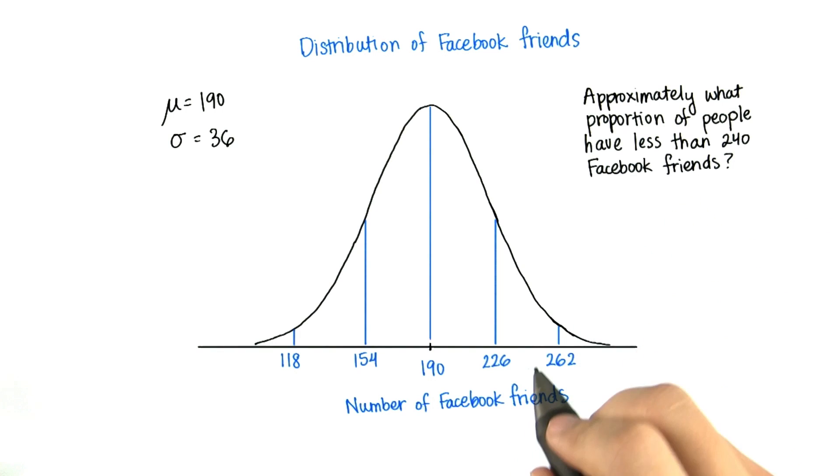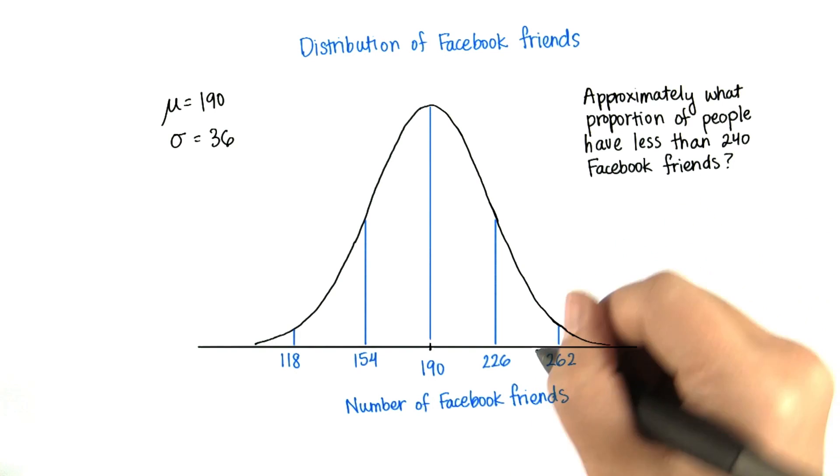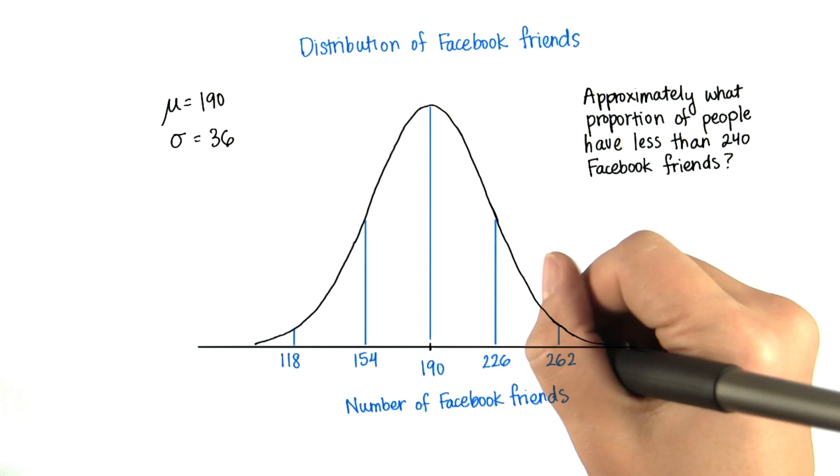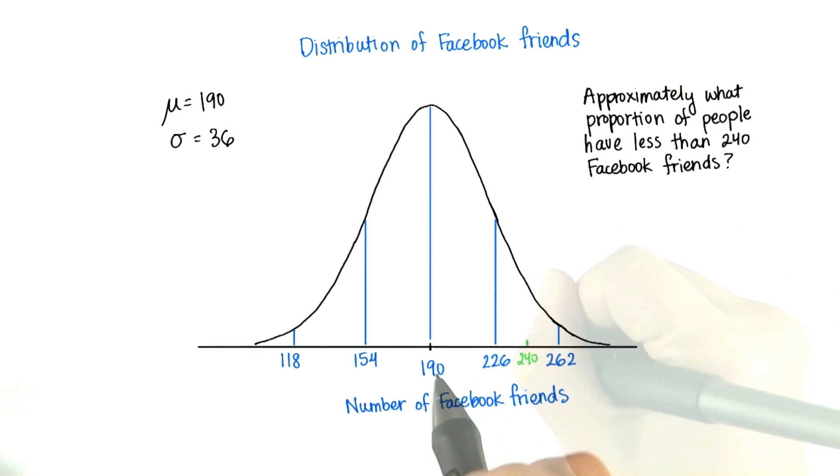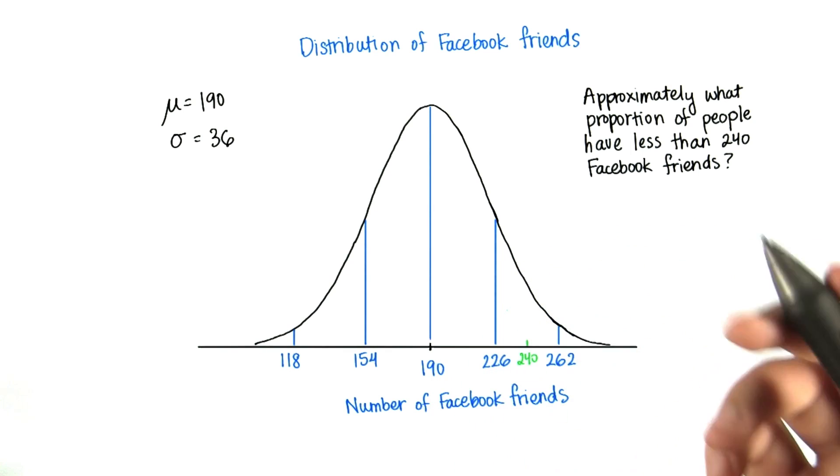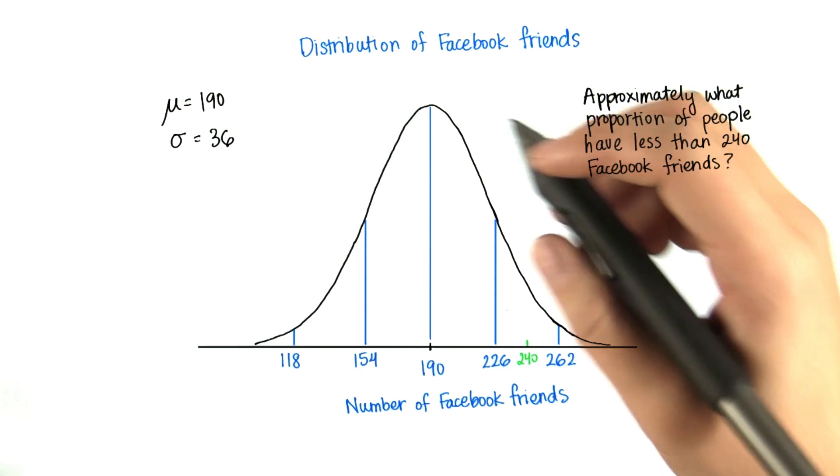Now I'm being tricky because 240 is in here, and that's not going to be an integer standard deviation away from the mean. It's like 1.5 standard deviations from the mean, approximately.